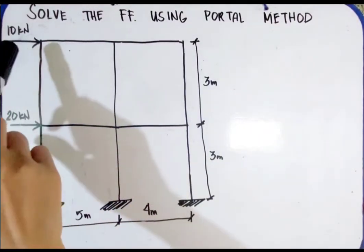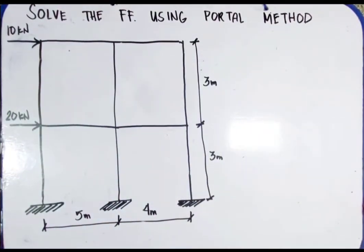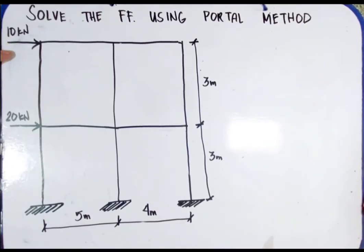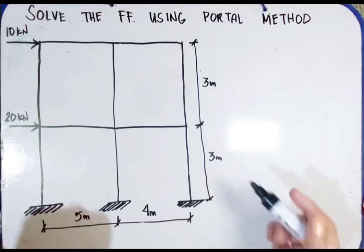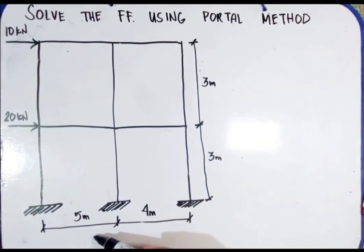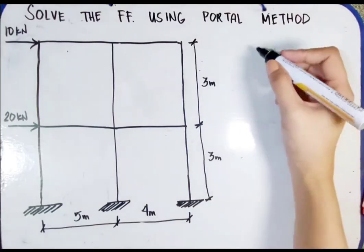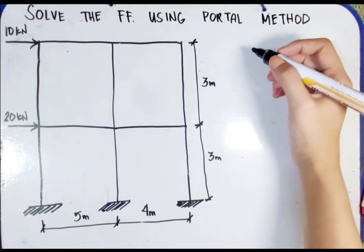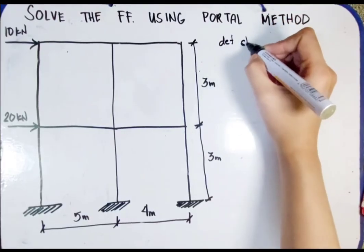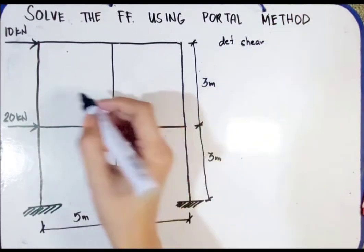Good day. Here are examples using the portal method — this is the easiest way to solve it. We have a two-story level frame with 10 kilonewtons and 20 kilonewtons applied loads, three meters for each story height, a five-meter span, and a four-meter span. The first thing we need to determine is the shear.